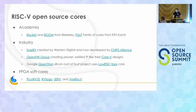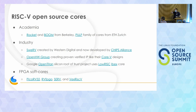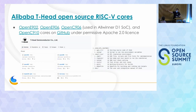An audience member notes that both VexRiscv and PicoRV32 have all been taped out, putting them beyond just FPGA software. That's a good point — they are both in silicon. Actually the next slide is about the open source silicon work that's going on. One thing not included there is that Alibaba has a chip design company called T-Head — similar to SiFive in that they design cores and license them.